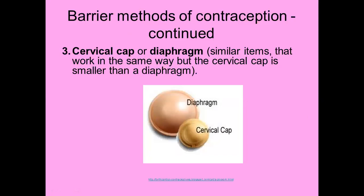We're still on barrier methods, still on female ones — the third barrier method. These are two similar things that work the same way: the cervical cap or the diaphragm. The SAG stipulates you need to know about the diaphragm — a really quite old-fashioned but relatively effective method of contraception, not readily available in South Africa as far as I know. The cervical cap is a bit smaller than the diaphragm.